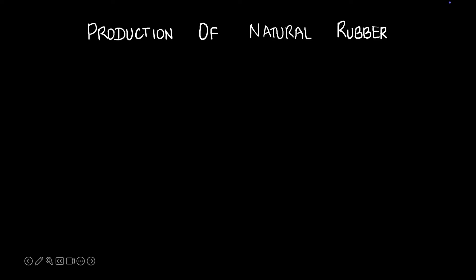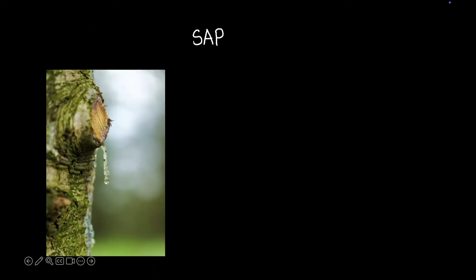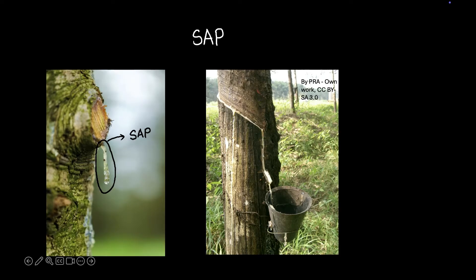Step one for the production of natural rubber is the collection of sap. Can you see this gummy thing slowly dripping out of the bark of the tree? That sticky liquid that flows out of trees is called sap. Rubber also comes from sap, but not from just any random tree. There is a particular tree called the rubber tree, and it produces a white-colored sap which is then processed to produce rubber.